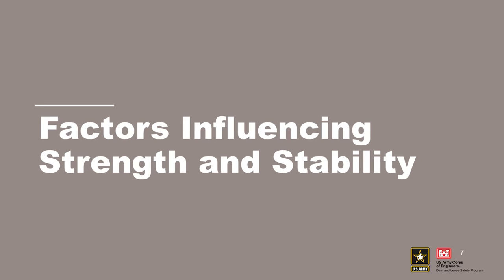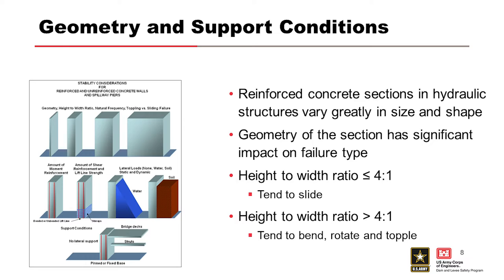Factors influencing strength and stability include the structure shape. Tall slender walls are more likely to bend and topple and rotate as a failure mode. Structures with a low height-to-width ratio are more stable but tend to slide. For reinforced concrete, you consider how much reinforcement there is, whether lift lines are bonded or unbonded, and whether shear stirrups are present. Walls retain water loading and soil loading, and later sessions will cover seismic potential failure modes.